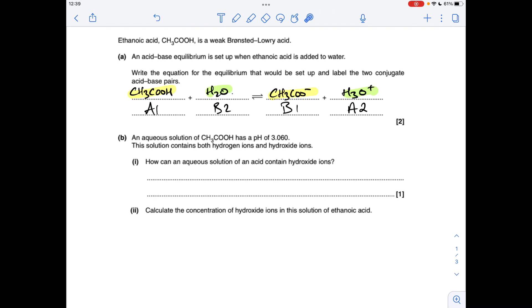The next part will be, how can an aqueous solution of an acid contain hydroxide ions? Because it's aqueous and water can dissociate. So I would always back it up, if you can, with an equation.